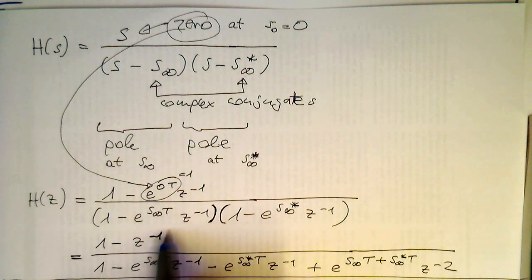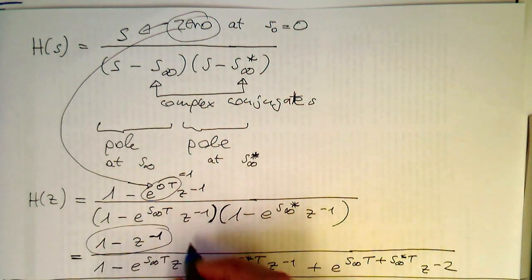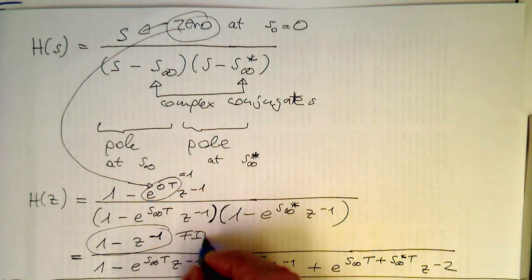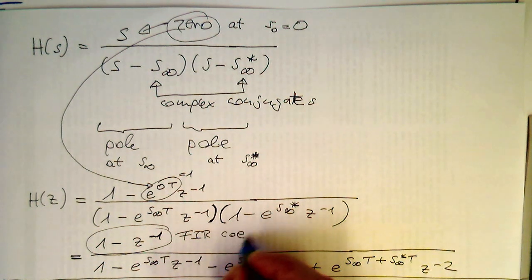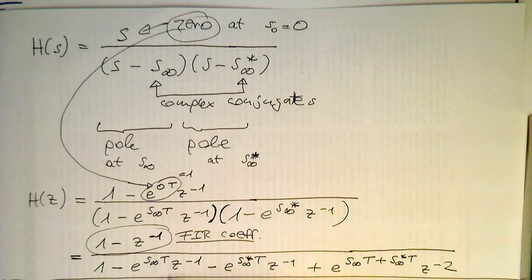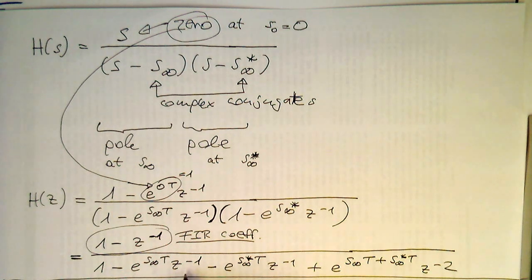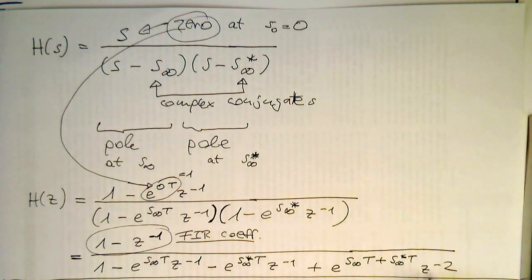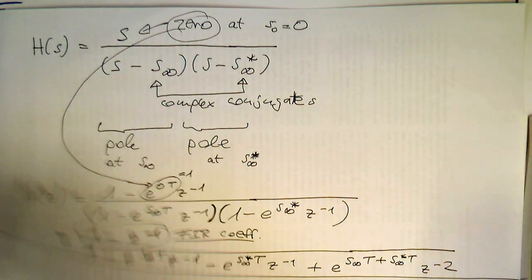This already gives us a data flow diagram, because here we have our FIR coefficients, and here we've got our IIR coefficients — we just need to put these two together. We have a delay term by one time step and a delay term by two time steps. Let's rewrite this in a form that we can turn into a filter.